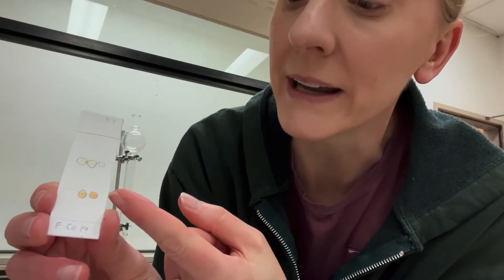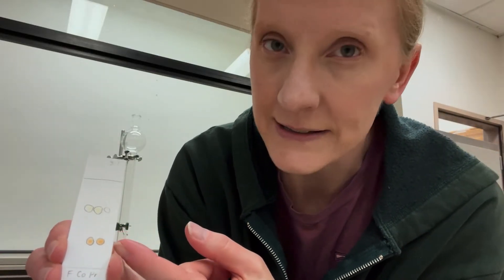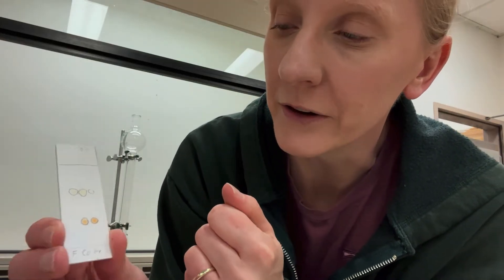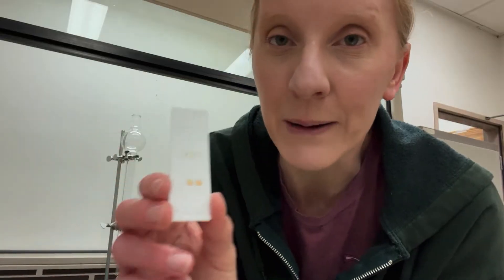You want to choose your solvent system so that the molecule that you care about, which in my case is the acetyl ferrocene, has an RF of about 0.3 and that it's quite separated from other contaminants. So I'm going to use a 3 to 1 hexane to ethyl acetate mixture for my column.